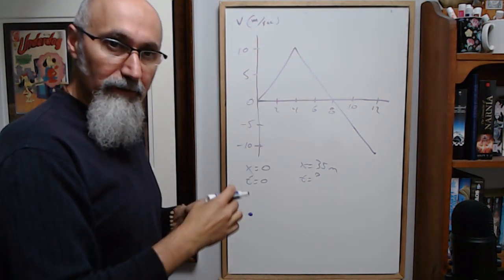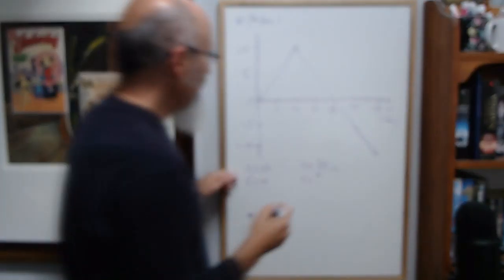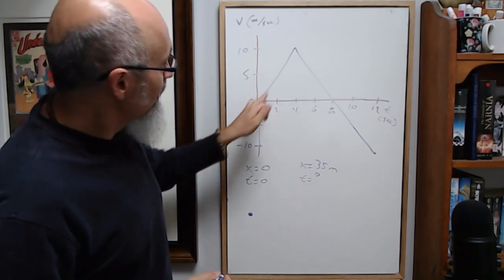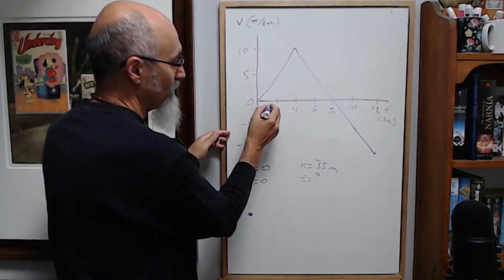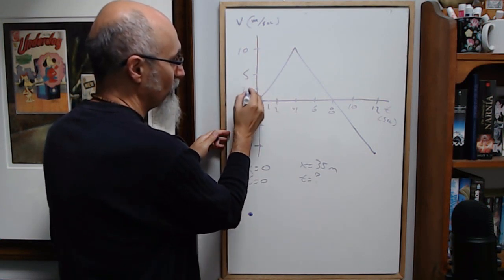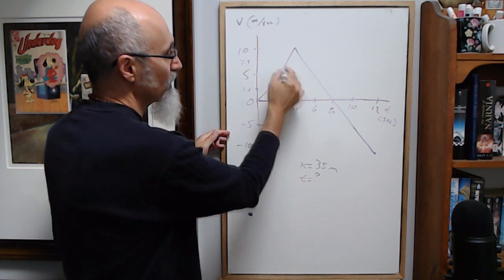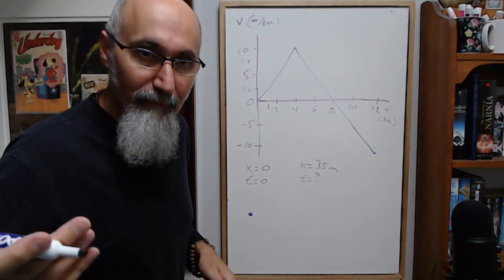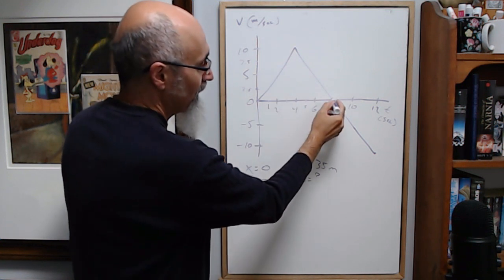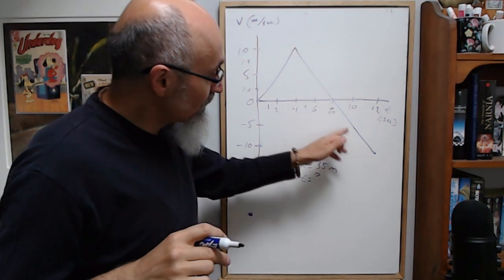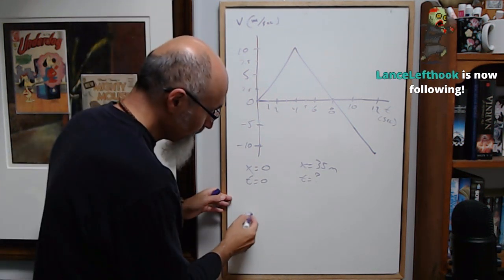If you see velocity increasing over time, you've got an accelerating particle. At time zero the velocity was zero; at t equals 2 seconds it's 5 m/s; at t equals 4 seconds it's 10 m/s. Then it starts slowing down — at 5 seconds it's back to 7.5 m/s — and eventually reaches zero, then goes negative.